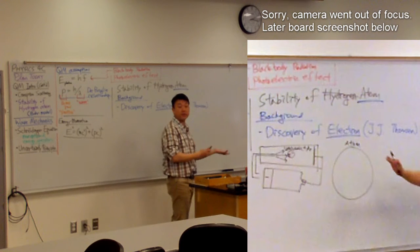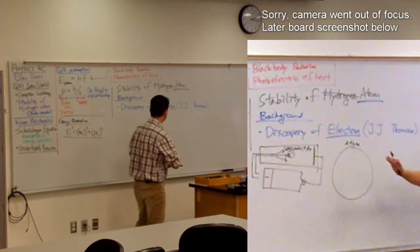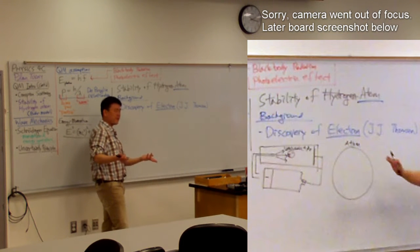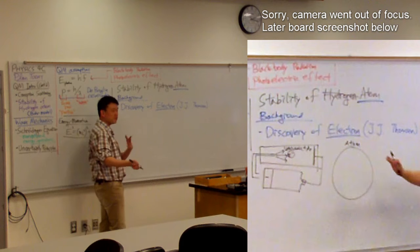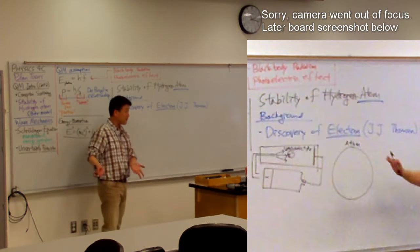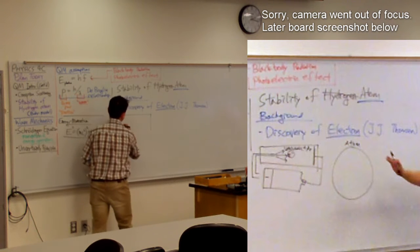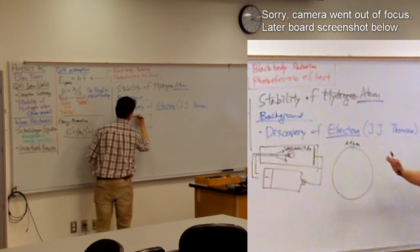The electron was discovered in what we could call cathode ray experiments. Everyone here knows what cathodes are? Your photoelectric effect kind of mentioned cathodes. So this is an electric experiment. You have some evacuated tube. Inside here, it's a vacuum.